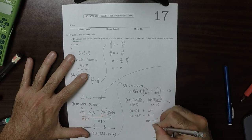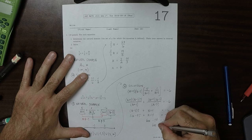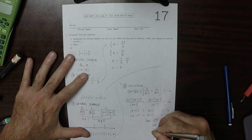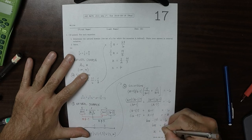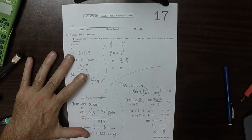So then 6x, adding 14 to both sides, is 8. So x is 4 thirds.